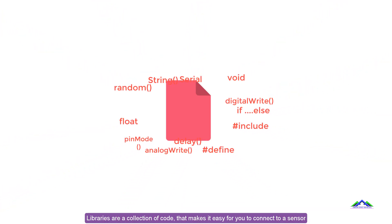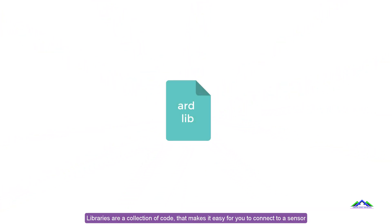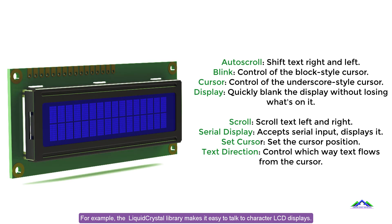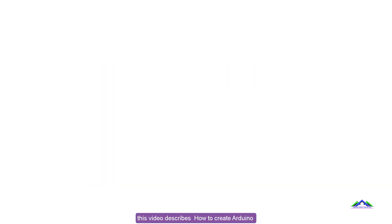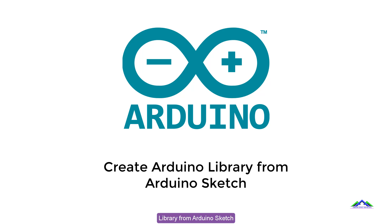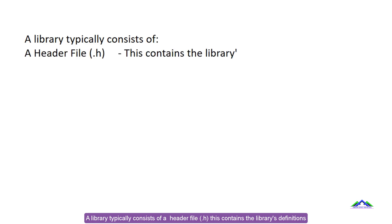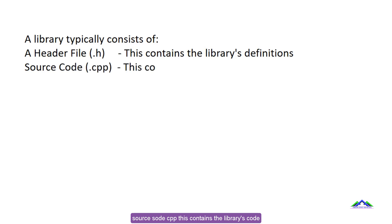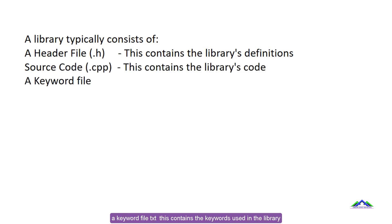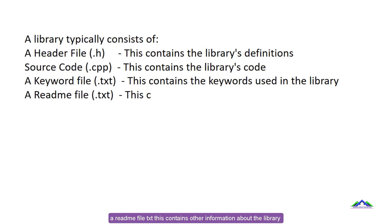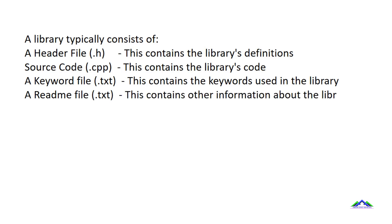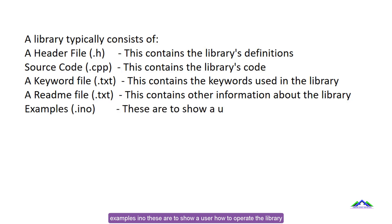A library is a collection of code that makes it easy for you to connect to a sensor or display module. For example, the liquid crystal library makes it easy to talk to character LCD displays. This video describes how to create an Arduino library from an Arduino sketch. A library typically consists of a header file (.h) containing the library's definitions, a source code file (.cpp) containing the library's code, a keywords file (.txt), and a readme file with other information about the library and examples.